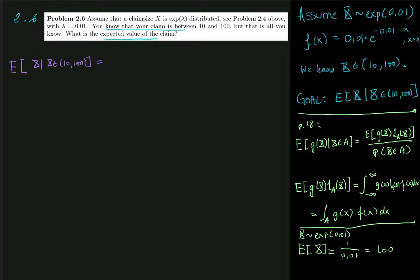And we've already written up the definition for the conditional expectation here, and one of the first things we notice is in the denominator we have the probability that x lies between 10 and 100.